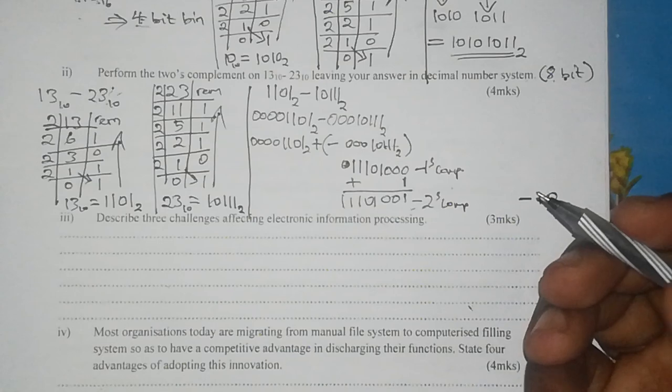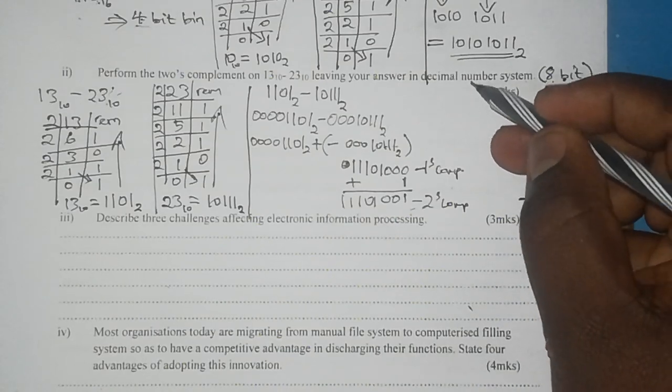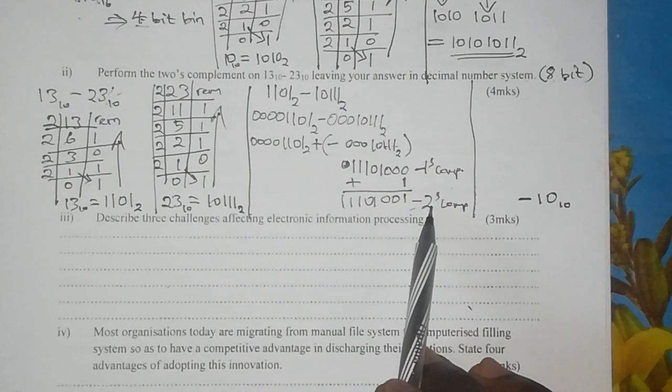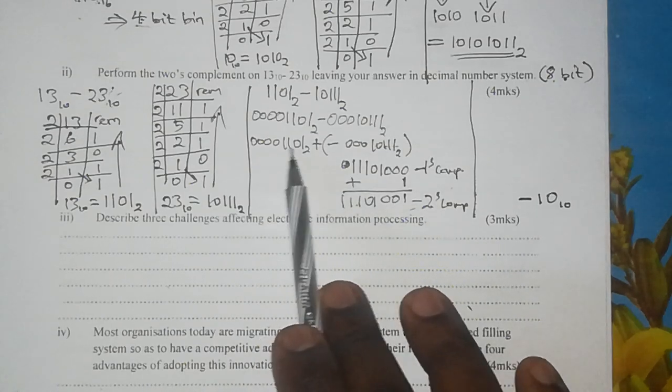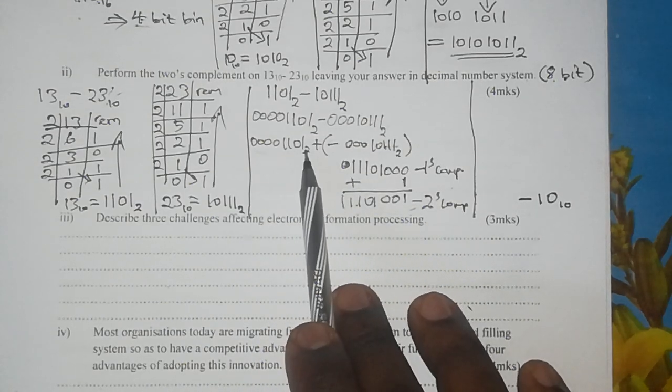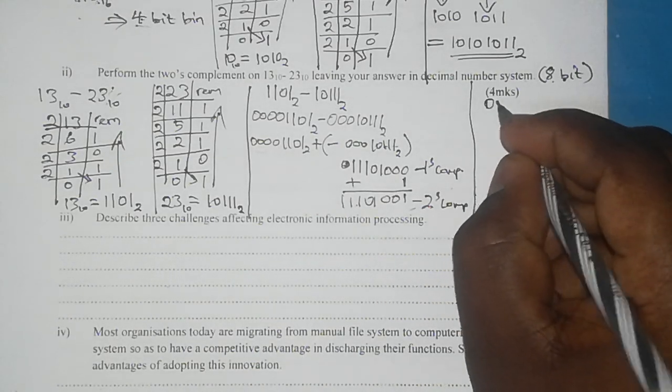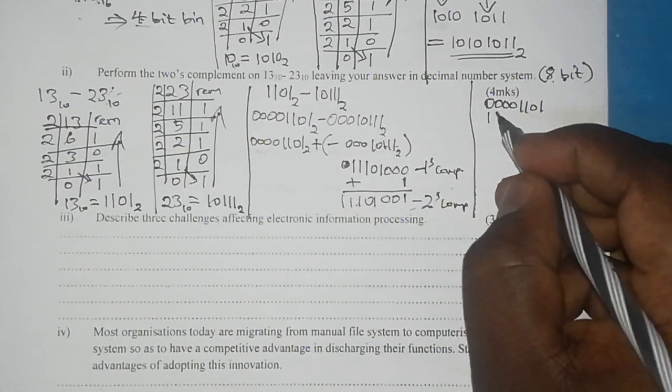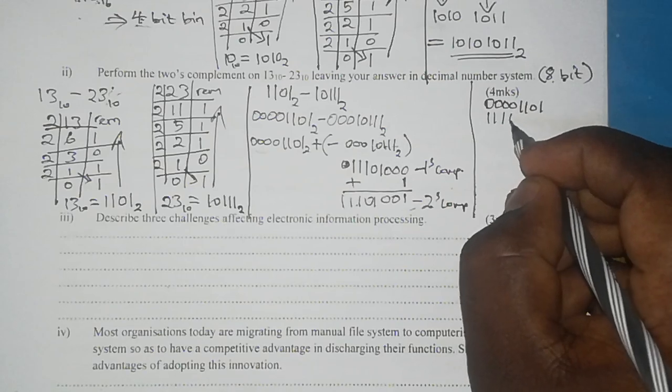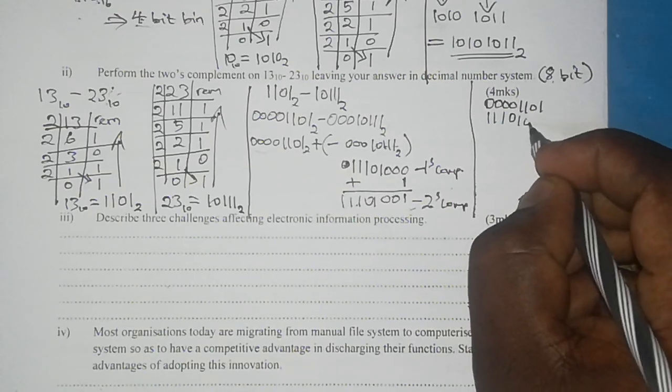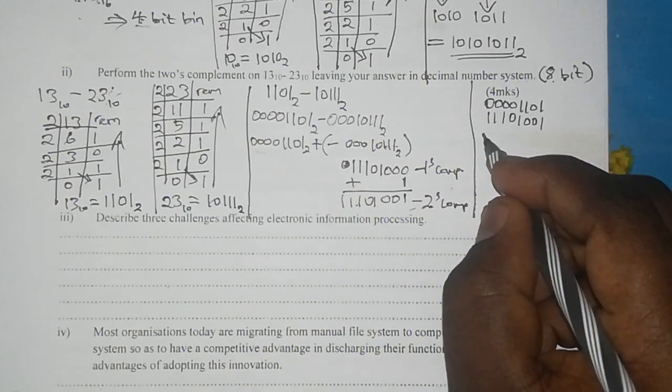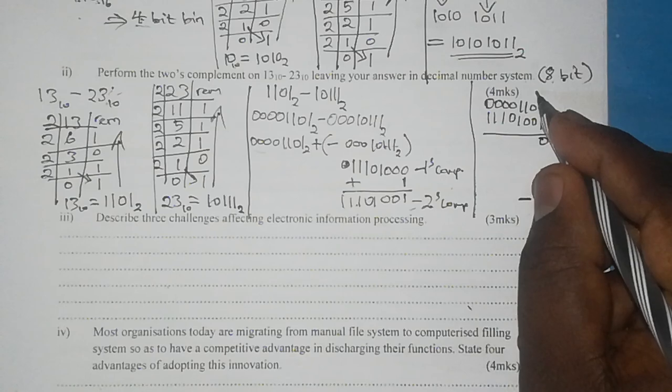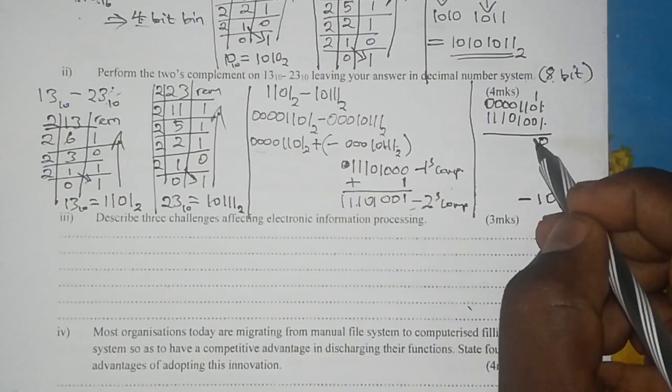Now, next step is we take this 2's complement and add it to our positive number. So we have 00001101. We are adding to that 11101001. So 1 plus 1 gives you 0 and we carry a 1. 1 plus 0 plus 0 is 1. 1 plus 1 is 0, carry 1.